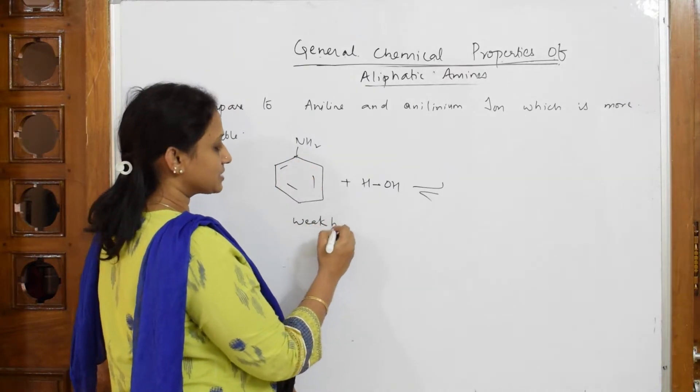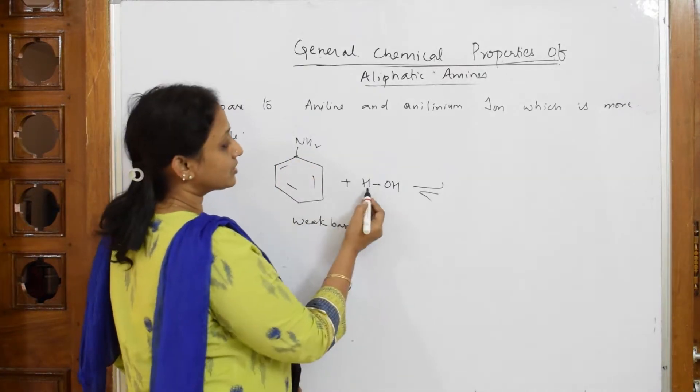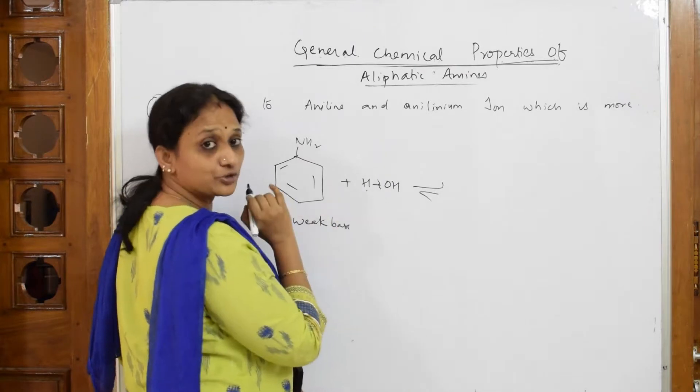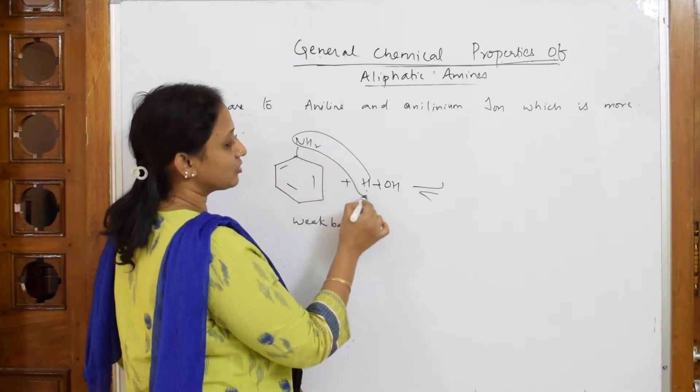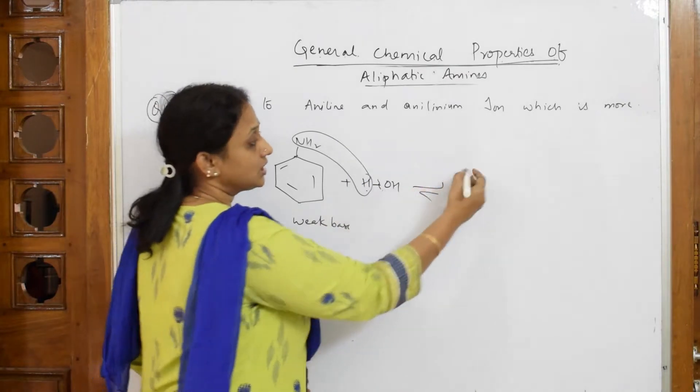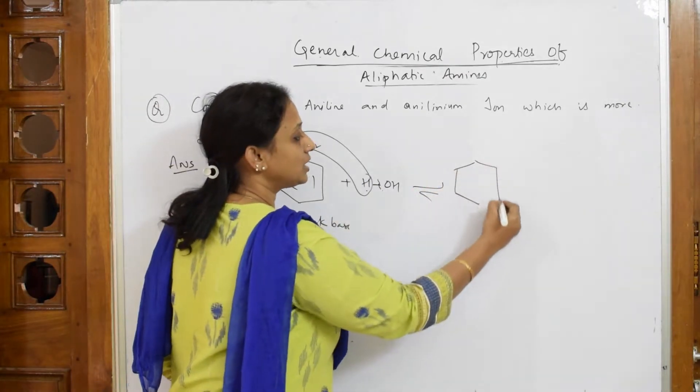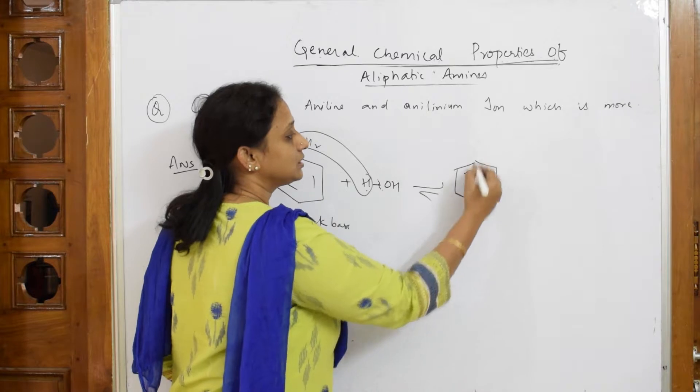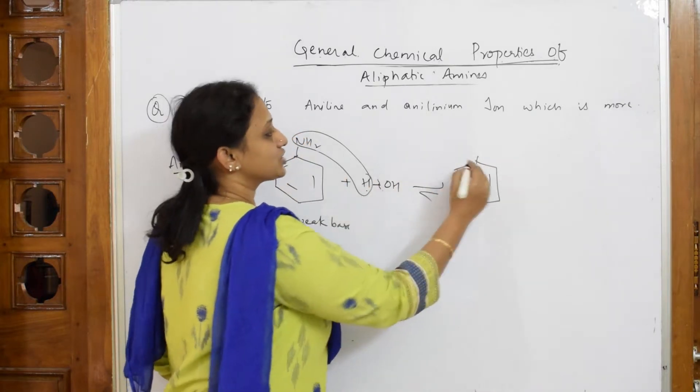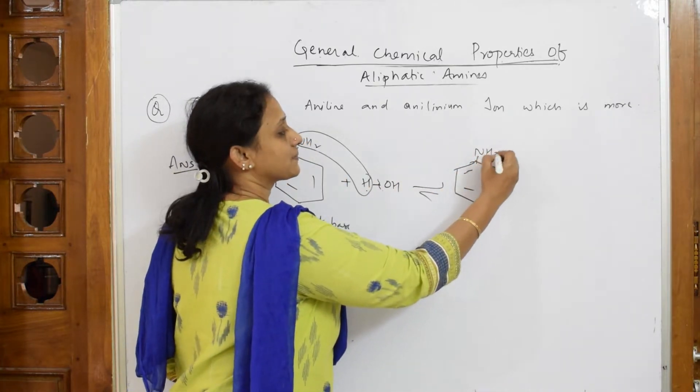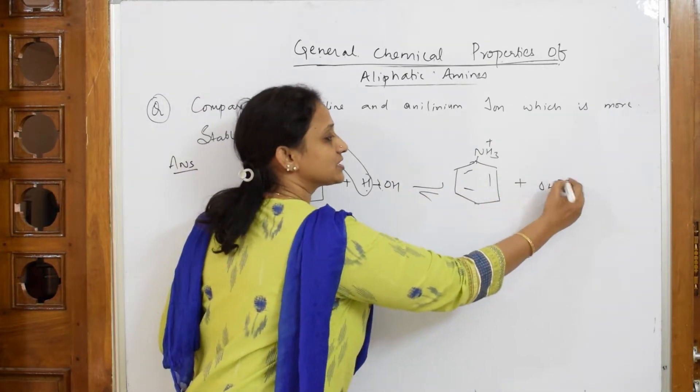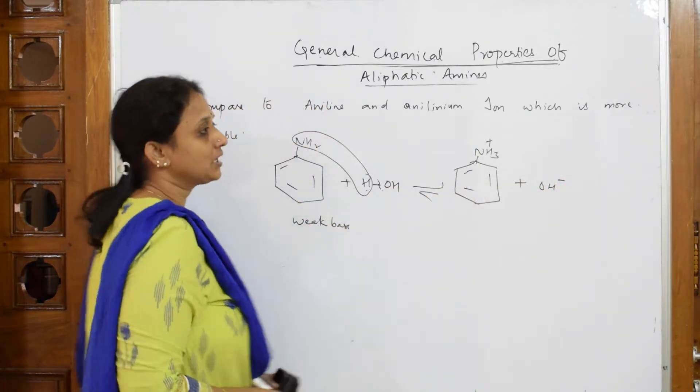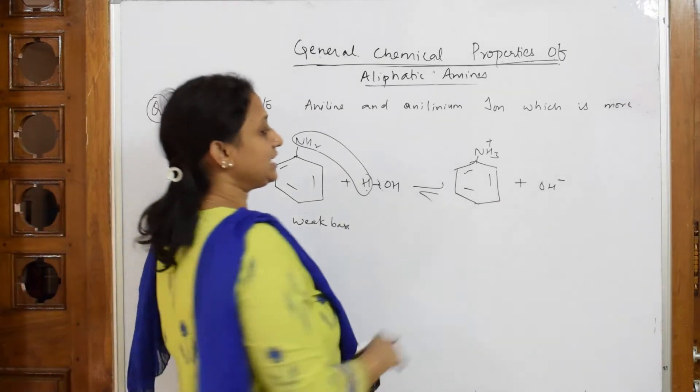When NH2 picks up H+ ion, making this bond, it forms a new ion. NH2 plus H becomes NH3+, and OH- is released. Because it is releasing OH-, it's a weak base. This is called anilinium ion.